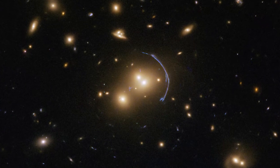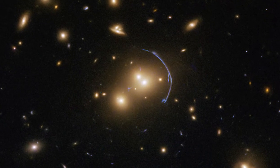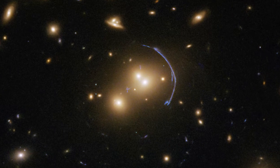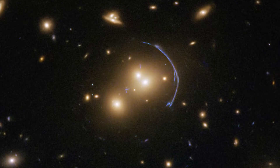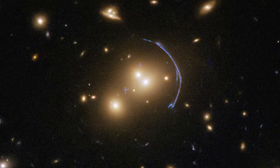Hubble can resolve details within the multiple banana-shaped arcs that are one of the main results of gravitational lensing, as the images of background sources are distorted.